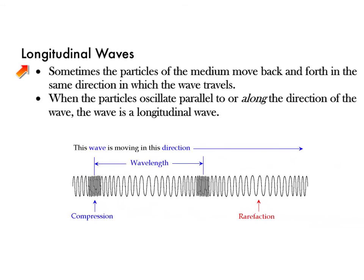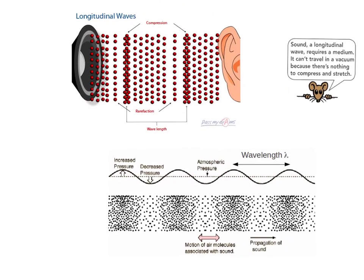The other major type of wave is called a longitudinal wave. Think about taking a spring, attaching it to a wall, stretching it out, and then smacking the end so that a wave pulse travels down that spring and back — with areas that compress and areas that stretch. In longitudinal waves, the particles of the medium move back and forth in the same direction in which the wave travels. When those particles oscillate parallel to the direction of the wave, that's a longitudinal wave.